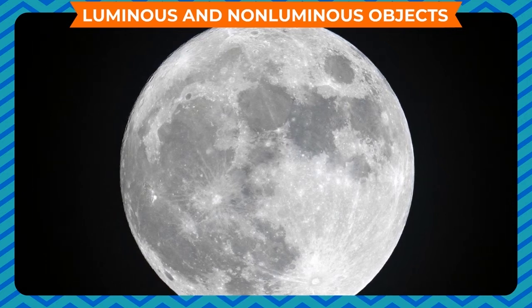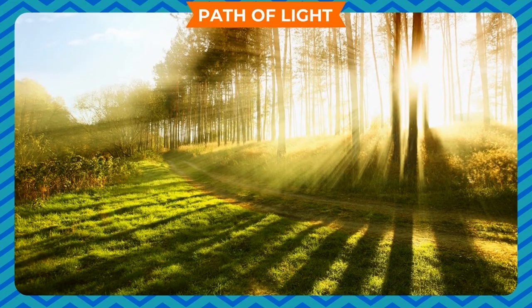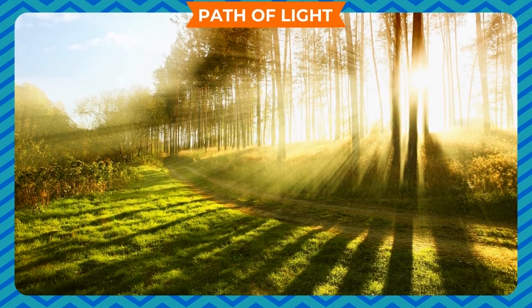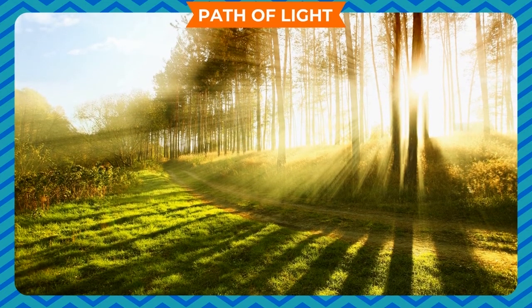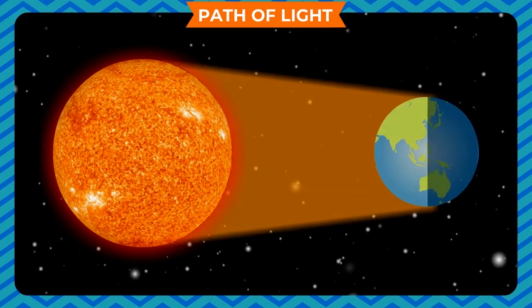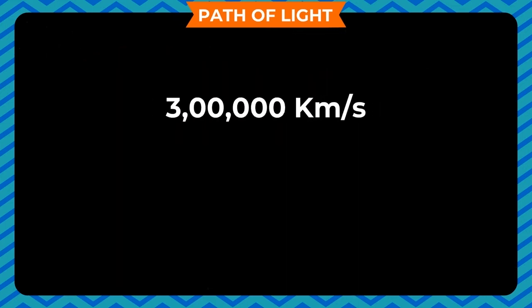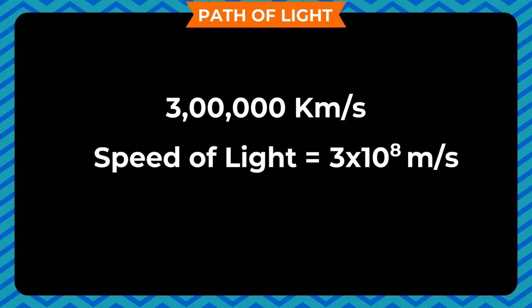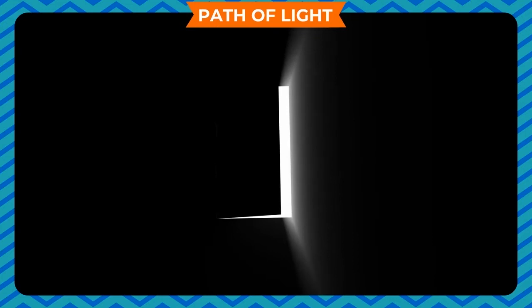Path of light. Light travels in a straight line as long as it does not strike any object in its path. In vacuum, it travels in a straight line at a constant speed of 3 lakh kilometers per second — 3 × 10⁸ meters per second — known as the speed of light. You must have observed that whenever a beam of light enters a dark room through a tiny hole in the door, it seems to travel in a straight path.